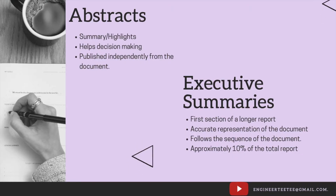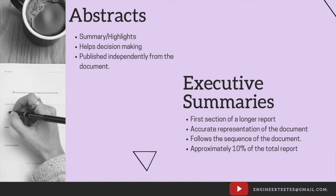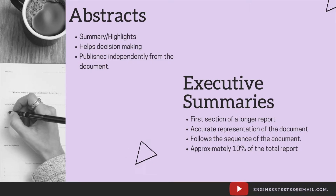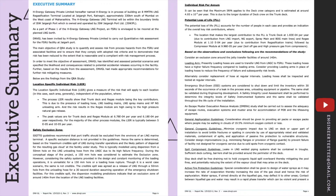Someone can take the whole report, read through the executive summary, and be rest assured that they have an accurate representation of what the main body of the document contains. Now there's a rule of thumb that says it should be approximately 10% of the total report. That's just the rule of thumb — it's not set in stone.